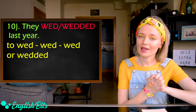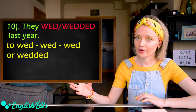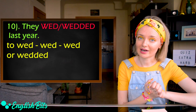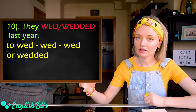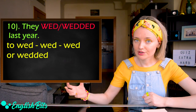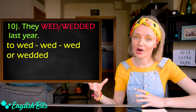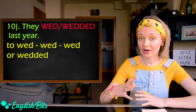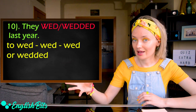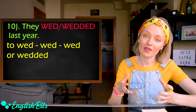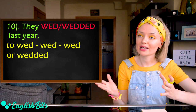Number ten: They wed — or wedded — last year. The verb to wed can be regular and irregular. If it's irregular: to wed, wed, wed. If it's regular: they wedded — we add -ed. Both options are correct. The meaning of to wed is to marry somebody.